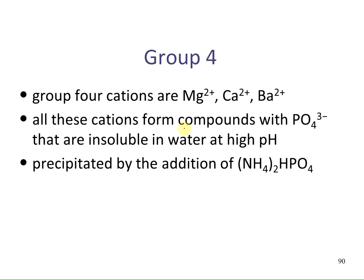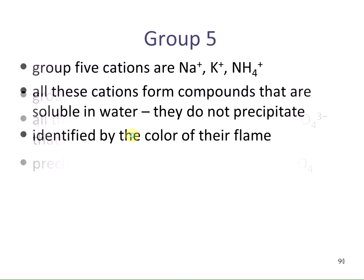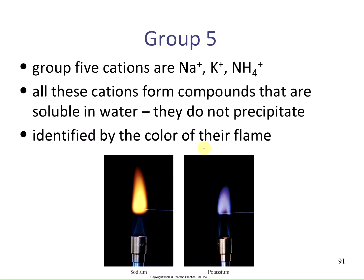The group 4 cations are magnesium, calcium, and barium. All these cations form compounds with phosphate that are insoluble in water at high pH. The group 5 cations are sodium, potassium, and ammonium. All these cations form compounds that are soluble in water and do not precipitate. They're going to be identified by the color of their flame—sodium produces a yellow flame, and potassium produces a blue-purple flame.